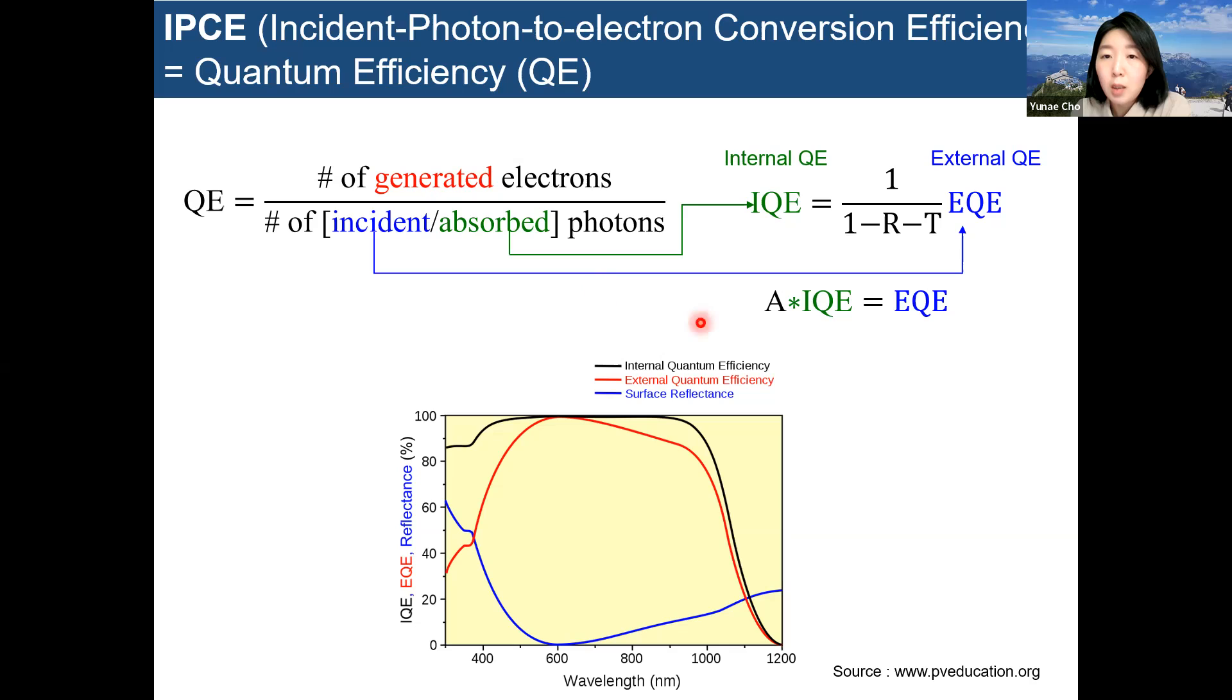In the internal QE, we should consider the reflectance and transmittance. So the two types of QE are a little different. It differs from the material properties and the structures of the device surface.